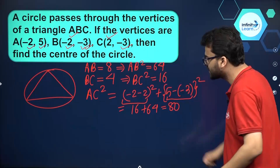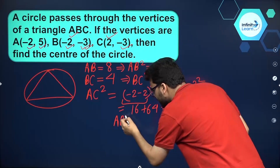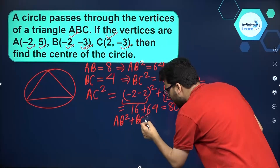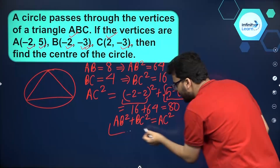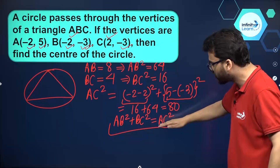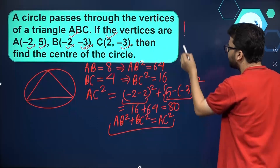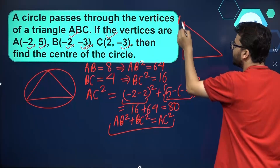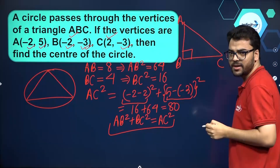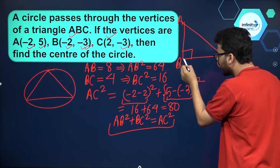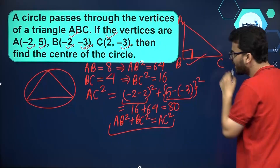We can see that AB² + BC² = 64 + 16 = 80, which equals AC². This means it is a right-angled triangle. Since AB² + BC² = AC², the right angle is at vertex B.